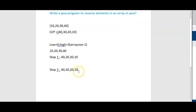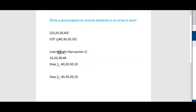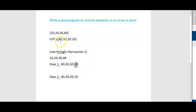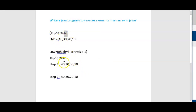Now we will look into more details. We will take two variables: low equal to 0, high equal to array size minus 1, so high equal to 3. Initially low will be at 10 and high will be at 40. Now swap these two elements — it will become 40, 20, 30, 10.